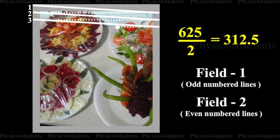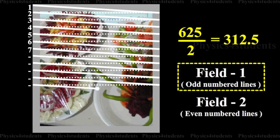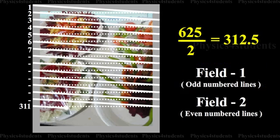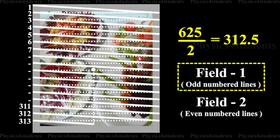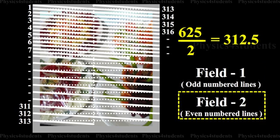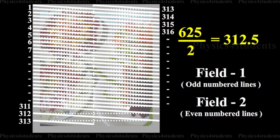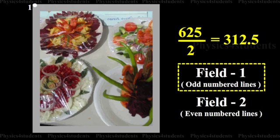This method of scanning is known as interlaced scanning. In the 625-line TV system, for successful interlaced scanning, the 625 lines of each frame or picture are divided into 312.5 lines, and each set is scanned alternately to cover the entire picture area.